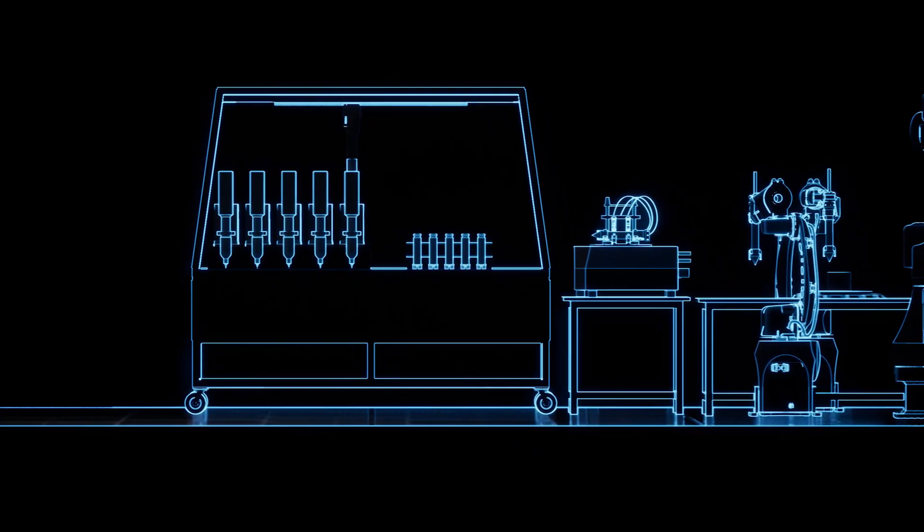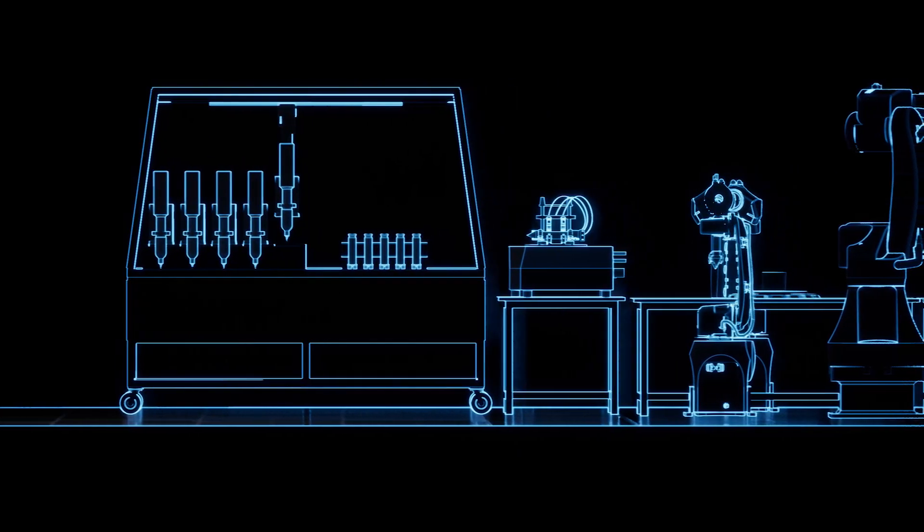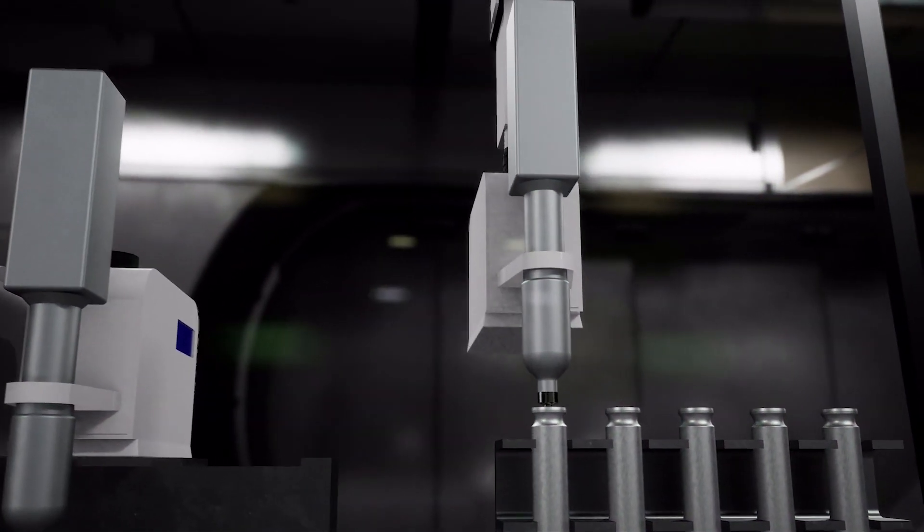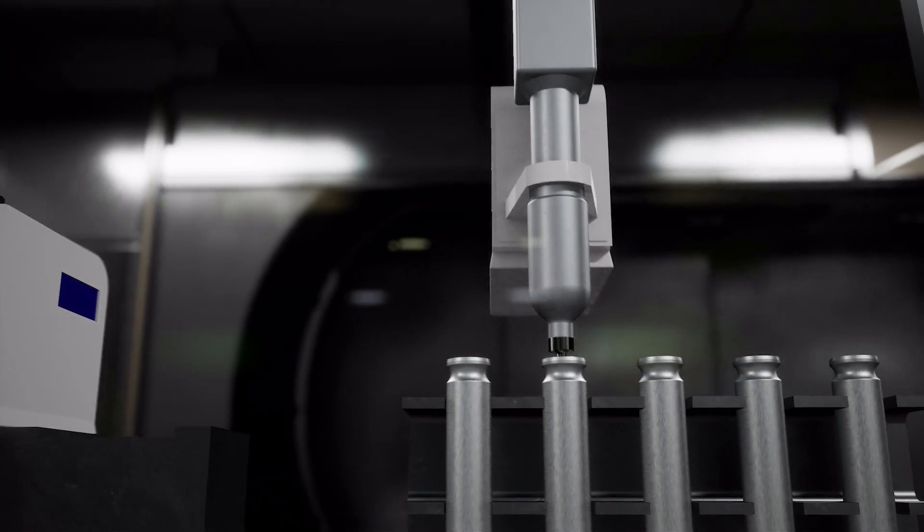The process elements work together by first selecting a propellant formulation. Station A then remotely doses the solid and liquid ingredients for a two-pound batch of solid propellant into a container.